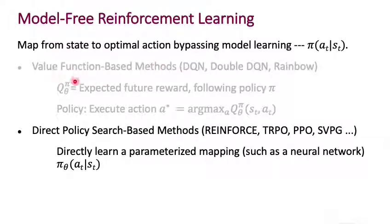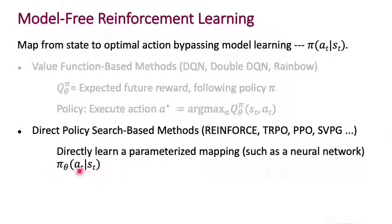Another major class of methods within model-free reinforcement learning is called direct policy search-based methods. In direct policy search, we actually sidestep even the step of learning a Q function — not only do we not learn a model, we don't even learn a Q function. We instead learn directly a parameterized mapping from states to actions. In value function-based methods, we learn the Q function and then execute an action A-star equals argmax. In DDPG we did something similar, but we still had a Q function. In direct policy search-based methods, we just directly learn a policy.